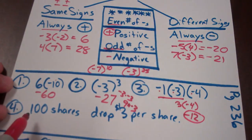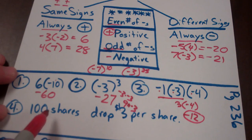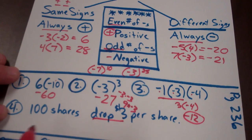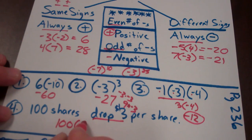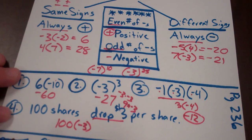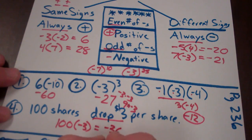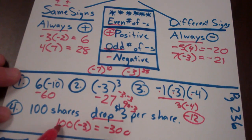Problem four: one hundred shares drop three dollars per share. A drop is negative, so that's written as one hundred times negative three. The total would be negative three hundred, because I have one negative and different signs always give a negative.